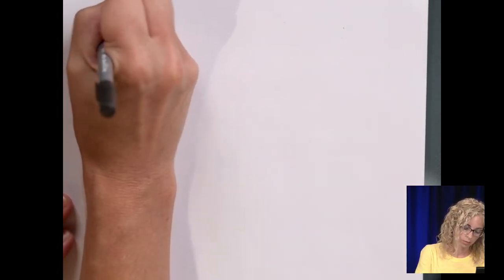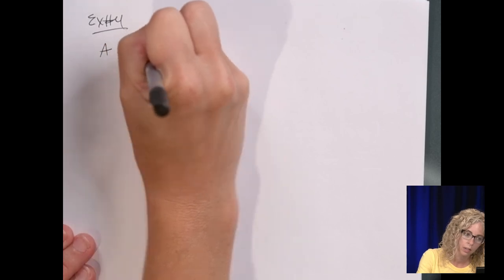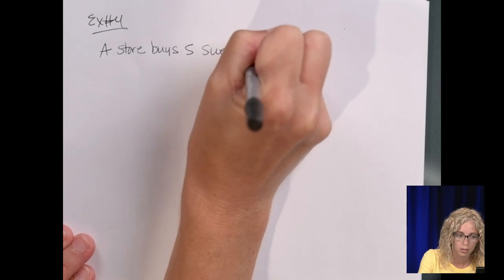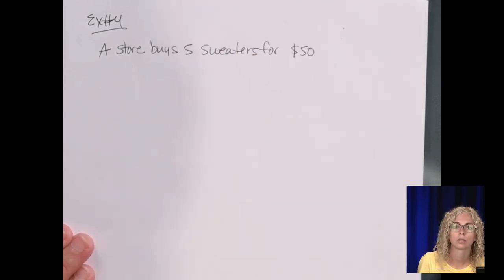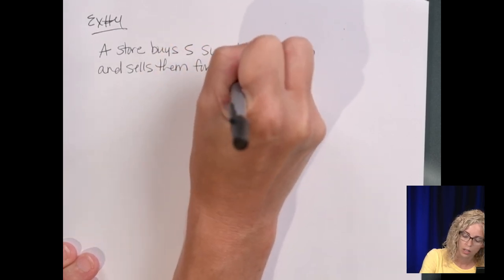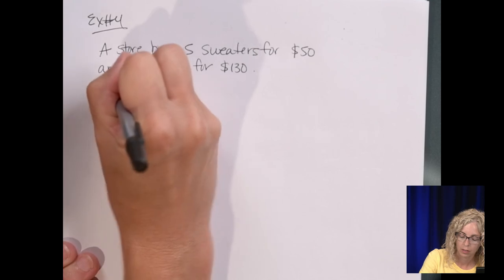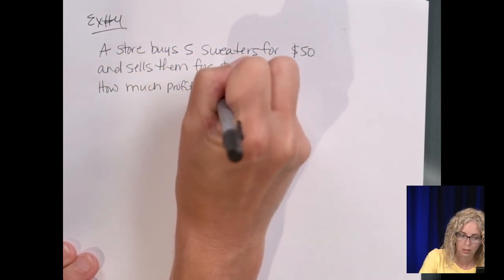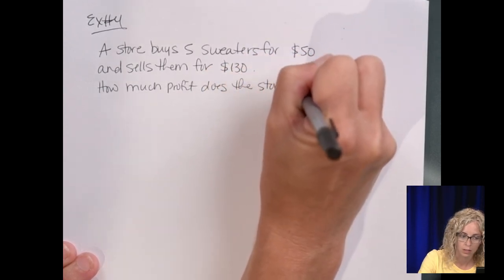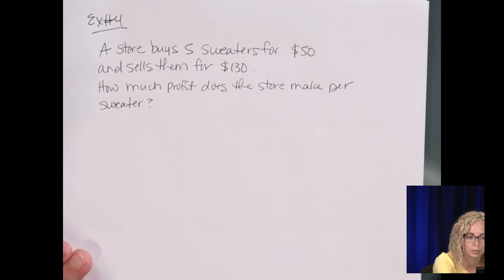Moving on to example number 4. Constant of proportionality from context. So this example says a store buys five sweaters for $50 and sells them for $130. How much profit does the store make per sweater?